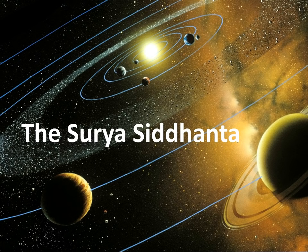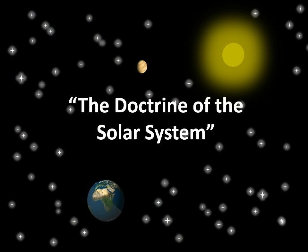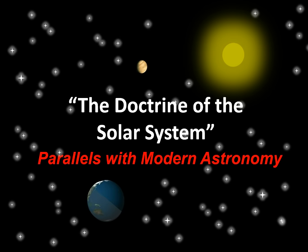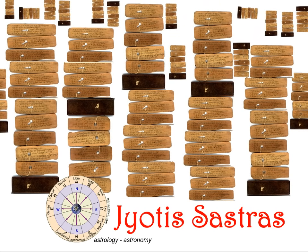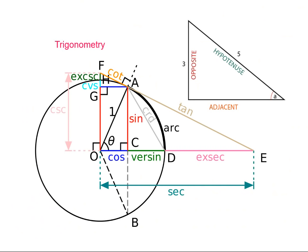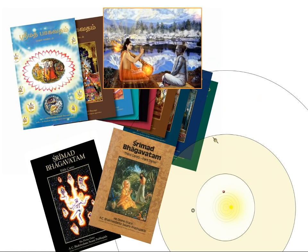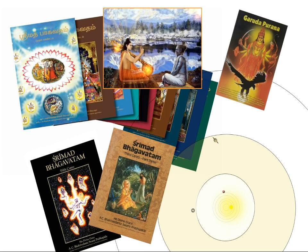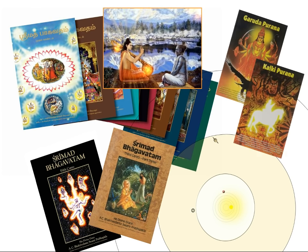The Surya Siddhanta — or as I like to call it, the Doctrine of the Solar System — and we're going to be exploring parallels it has with modern astronomy. It's part of the Jyotish Sastras, the ancient Indian traditions of astrology and astronomy, and is said to be the origins of modern-day trigonometry, so advanced mathematics there. It is organically related to the Indian Puranic tradition, and there are some key differences and similarities, as we'll learn later.